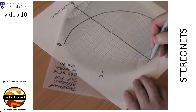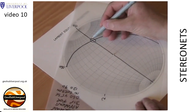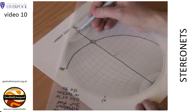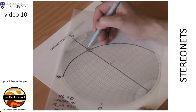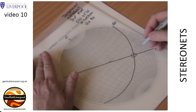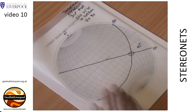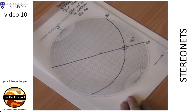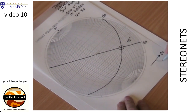The two planes intersect — mark this intersection on the tracing paper. Hold the tracing paper in place and count the small circles from the north pole along the north-south line. This shows the apparent dip on the vertical cross-section is 42 degrees in the direction 120.